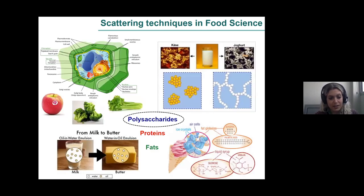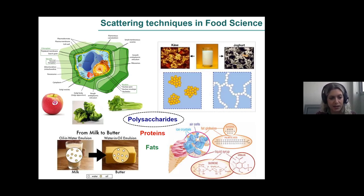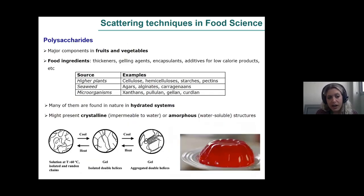Many foods have a very complex structure, and polysaccharides, proteins, and fats are the main macronutrients. Today I will talk about polysaccharides. One example is cellulose, found in the cell walls of vegetables and fruits. In general, polysaccharides are the major components in fruits and vegetables, accounting for up to 90% of the dry weight. They are also used in the food industry as ingredients because they have thickening and gelling properties, and can be used as encapsulants. They can be extracted from plants, seaweed, or produced from microorganisms.